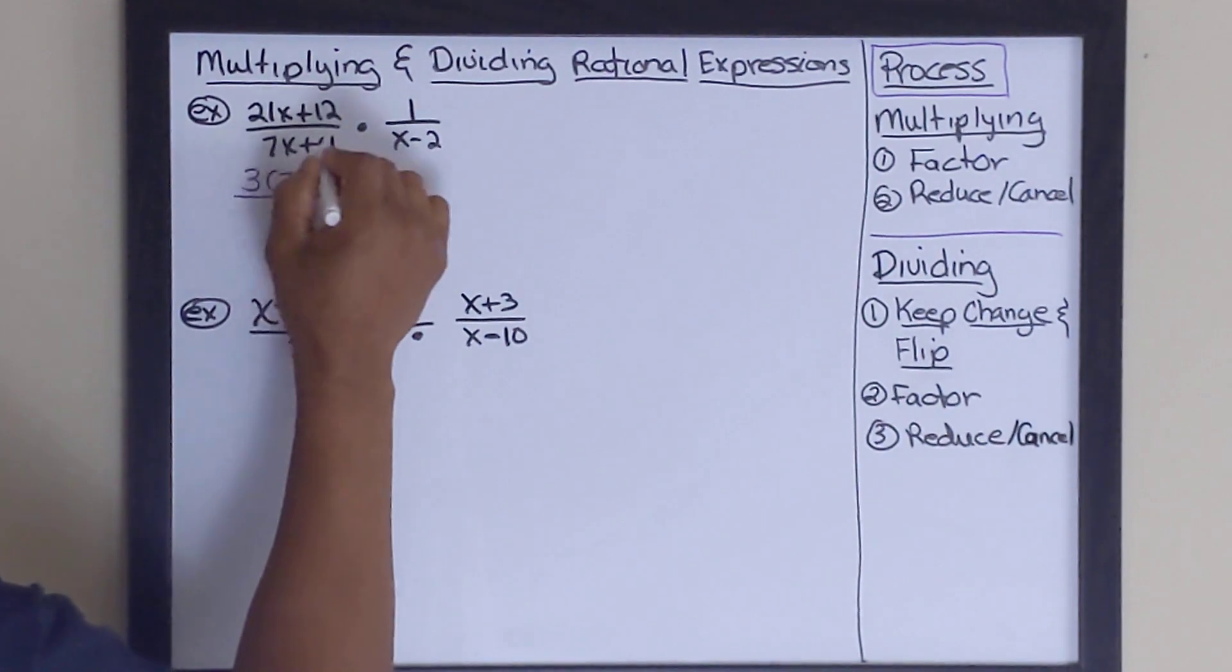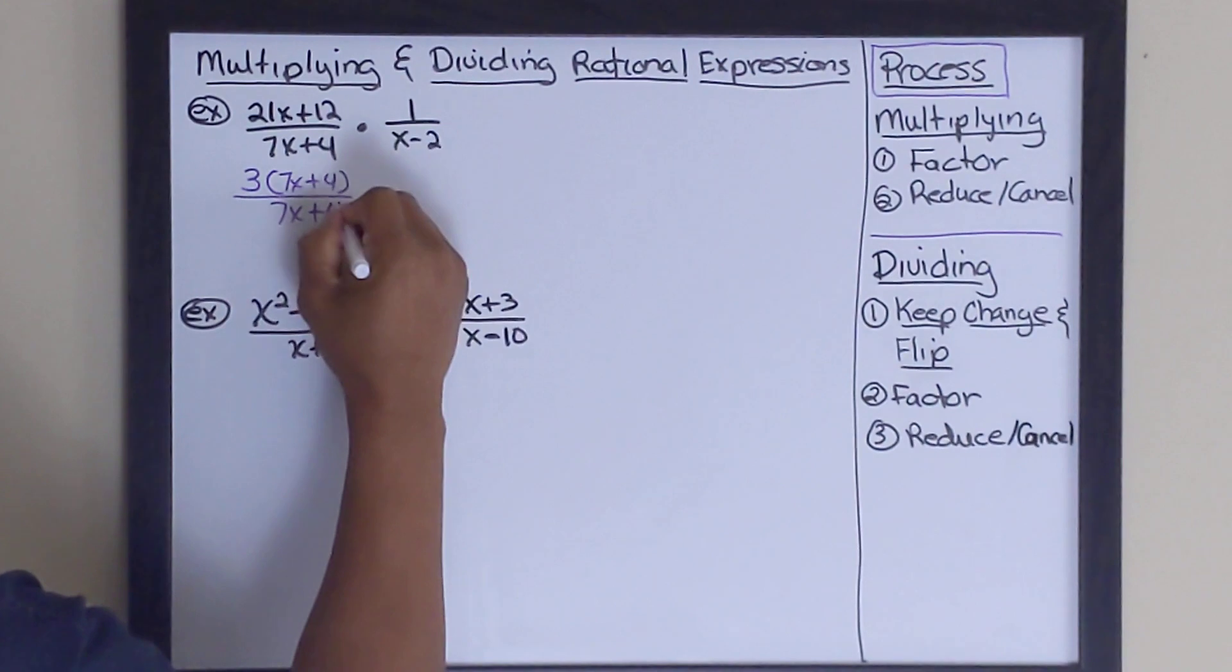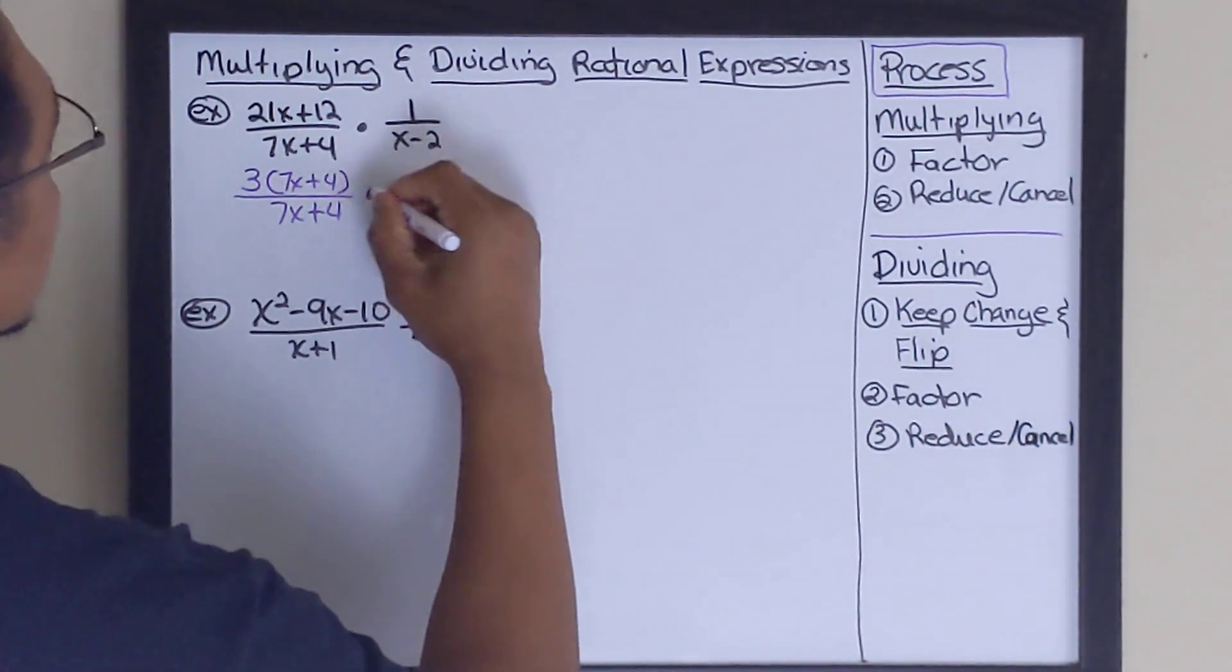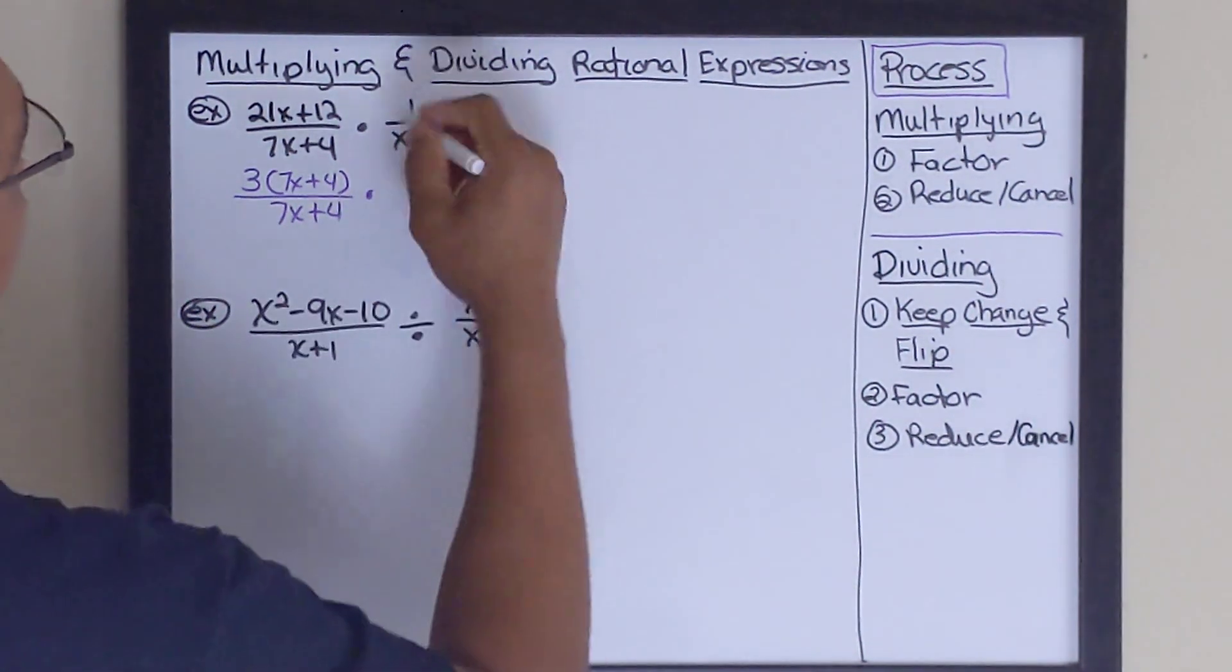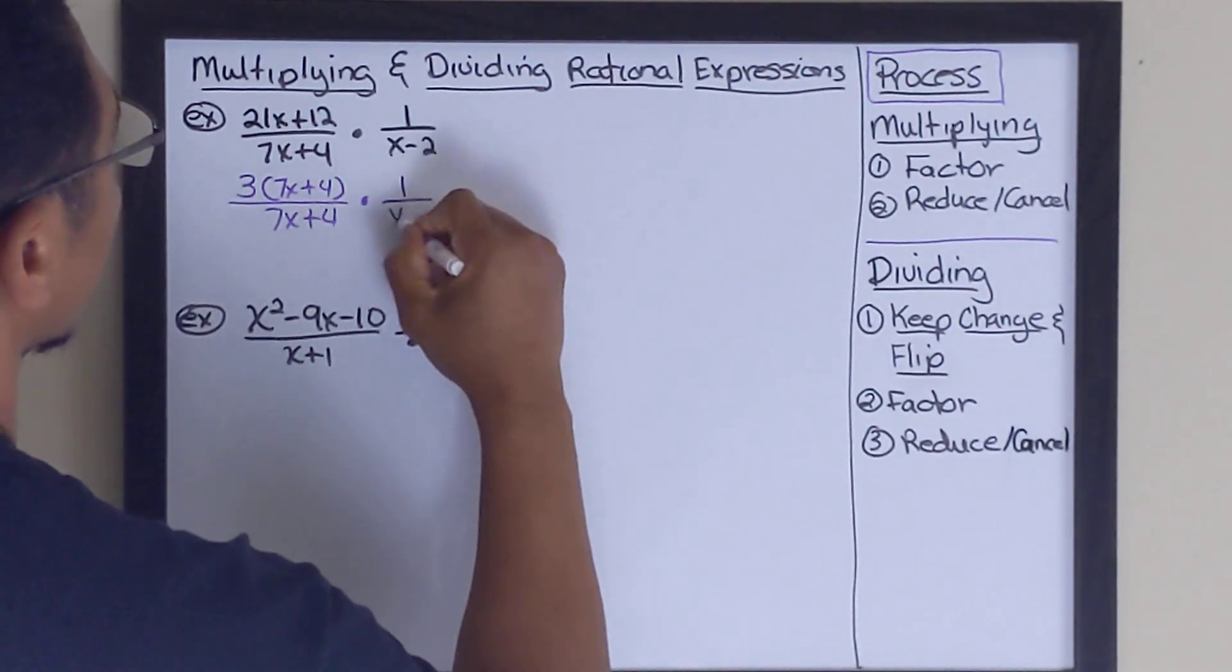All divided by, and then of course the denominator, that's not factorable. So we're going to just rewrite it. Now, the second expression does not have any factorable expressions on it. So we're just going to rewrite it, x minus 2.